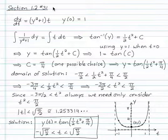Here's an example where it's important to make choices in the domain and the range of an explicit solution when we use the technique of separation of variables. Section 1.2, number 31. Here's the differential equation and the initial condition.